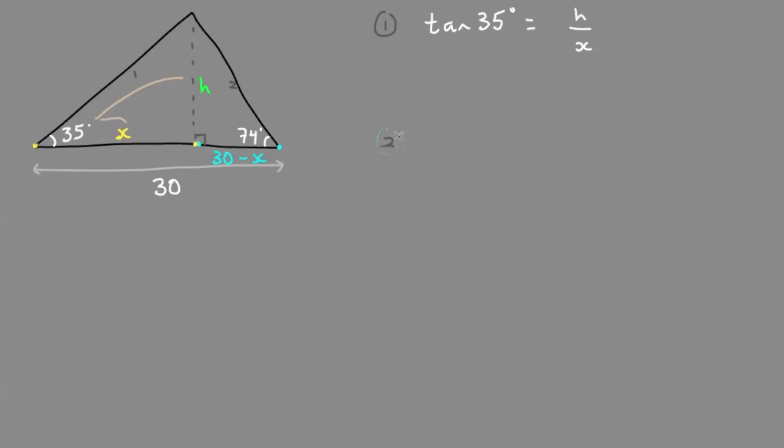In triangle 2, on the right side, we'll use tan again because we have the opposite and the adjacent. So given the angle, tan of 74 degrees equals the opposite, h, over the adjacent, which is 30 minus x.